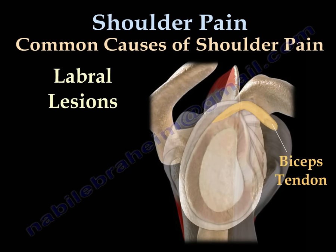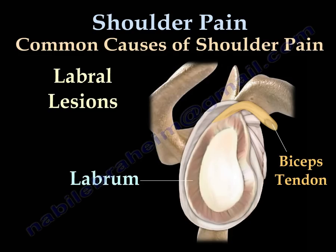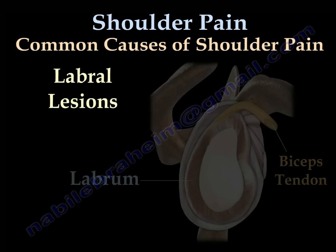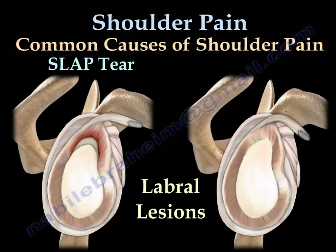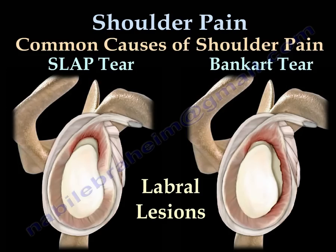The labrum is a cuff of tissue surrounding the rim of the glenoid which helps keep the head of the humerus in place within the shoulder joint. Tears of the labrum are often associated with significant shoulder pathology. Two of the most common types of labral injuries are the SLAP tear and the Bankart lesion. The SLAP tear occurs at the point where the tendon of the biceps muscle inserts on the labrum.